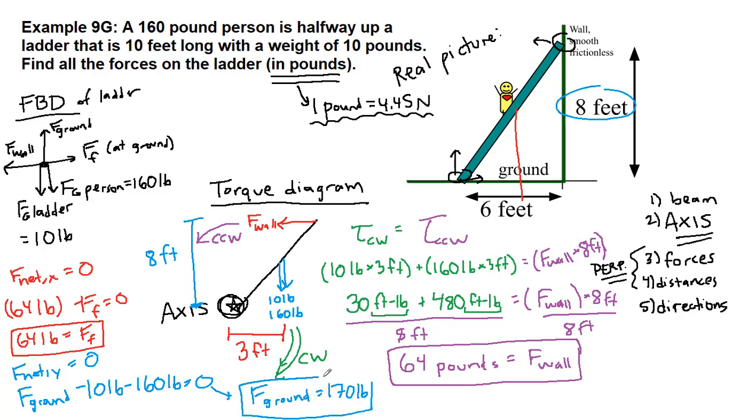So in almost all situations, there's really only one result you're going to get out of the torque diagram and torque equation, and the remaining unknown forces are going to come from looking at f net x equals 0 and f net y equals 0, just like this example.